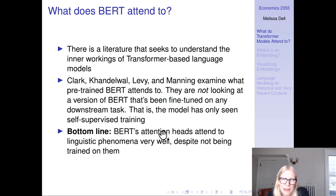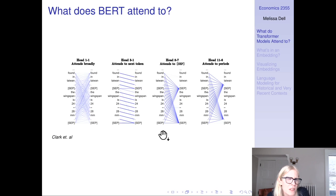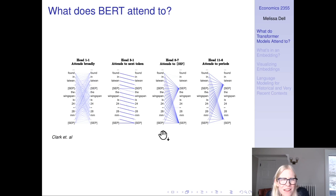They're not looking at a version of BERT fine-tuned on any downstream tasks — not fine-tuned for entity recognition, sentiment analysis, or classification. It's just the pre-trained BERT that has only seen self-supervised training. The bottom line is that BERT's attention heads attend to linguistic phenomena very well despite not being trained on them. This was potentially quite surprising to linguists and computational linguistics people who had come at NLP via human-engineered rules.